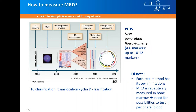Slide 15 shows the development of MRD measurement from 1995 to 2015. In the beginning there was G-banding — looking at chromosomes — and more recently next generation sequencing, which gives a very high level of sensitivity. Next generation flow cytometry uses four to six markers, up to ten to twelve markers, to detect cells among many others to determine MRD status. It is not as sensitive as next generation sequencing but can sometimes be quicker. Each test method has its own limitations.